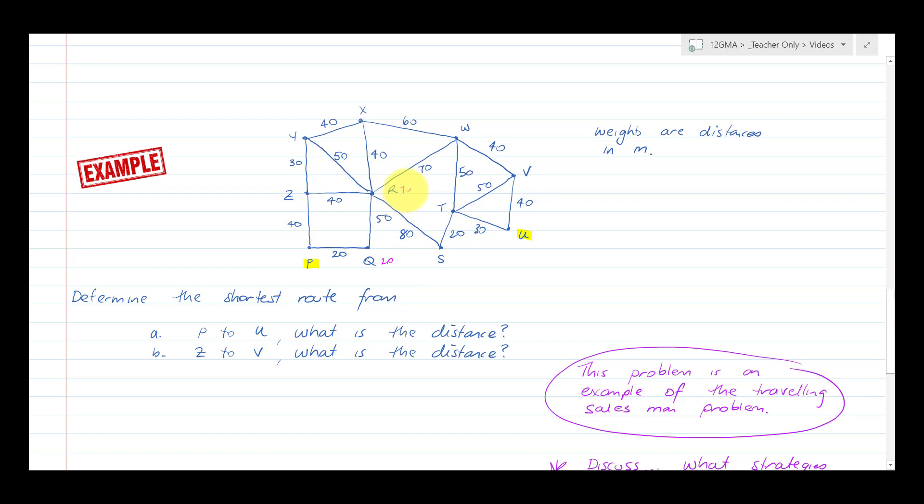My shortest distance from P to Q is 20. P to R is 70. P to Z is 40. Z to R is 80, so 70 is still the best way to get to R. Z to Y is 70, and that's probably the best way to get to Y. To X is 110, but if I do 70 plus 40, that's still 110. To S is probably 150. X to W is 170, but I could go 70 plus 70, which is just 140.